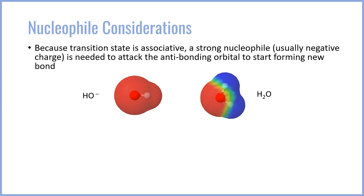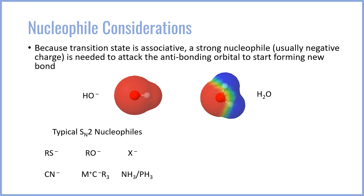If you compare the electrostatic potential diagrams between OH⁻ and H₂O, you'll notice that OH⁻ has a much larger negative charge density all over itself, indicated by red, as compared to H₂O. This is because OH⁻ is an anion, so it has very large diffuse negative charge character. Negative anions are much better SN2 nucleophiles — they're much more willing to give up negative charge density than neutral species like water. Typical strong SN2 nucleophiles include thiolates (RS⁻), alkoxides (RO⁻), halides (X⁻), cyanide, and Grignard reagents. Amines and phosphines are also strong nucleophiles despite lacking a negative charge, because they have a very available lone pair.